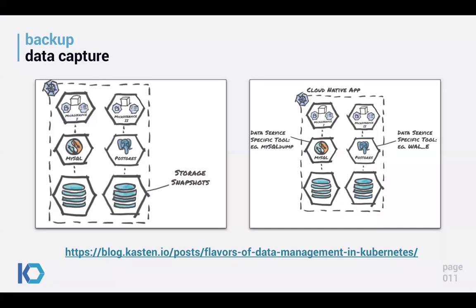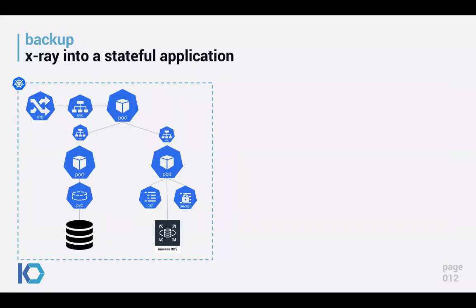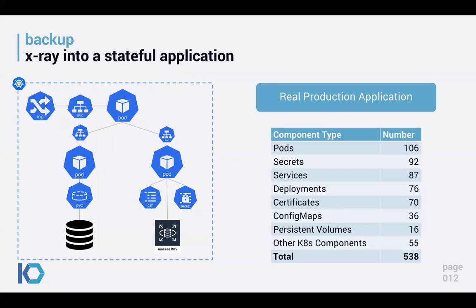There's a blog post on the Kasten website that covers the different flavors of data capture approaches. The other thing to think about is where all the state and data actually lives. In the traditional world, everything was on a VMDK or volume attached to a VM. That's no longer true in Kubernetes — you have to think about all the other information and state needed to bring an application back up.